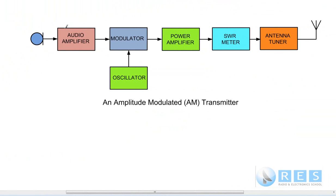This slide shows the amplitude modulated transmitter that we were discussing a couple of tutorials ago. You should have a pretty good idea how it operates as a block diagram. I've added two more stages now: I've added an SWR meter and an antenna tuner. We'll be talking about the antenna tuner later. In this tutorial we're mostly going to focus on the standing wave meter. I want to speak briefly about what standing waves are, why they are created, and how we measure them.